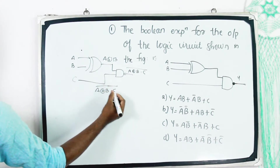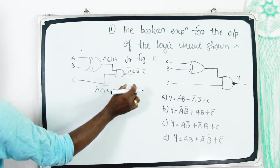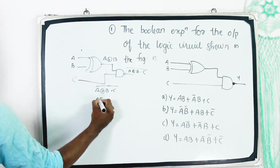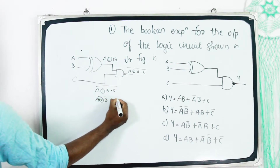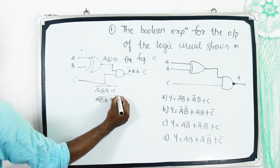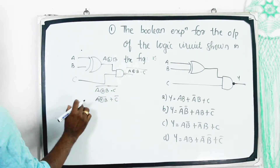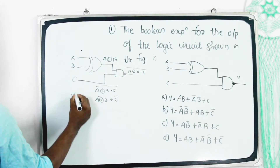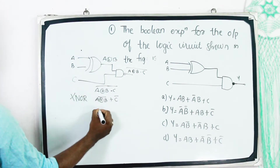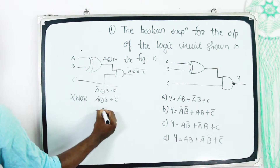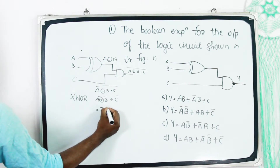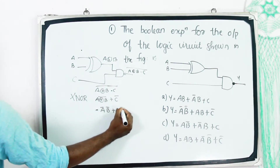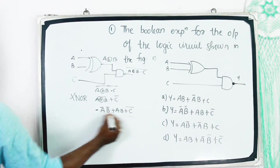Okay, let's apply De Morgan's. De Morgan's applied: A XOR B, the whole complement, plus C complement. This is X-NOR. That is equal to A complement B complement plus AB, plus C complement.